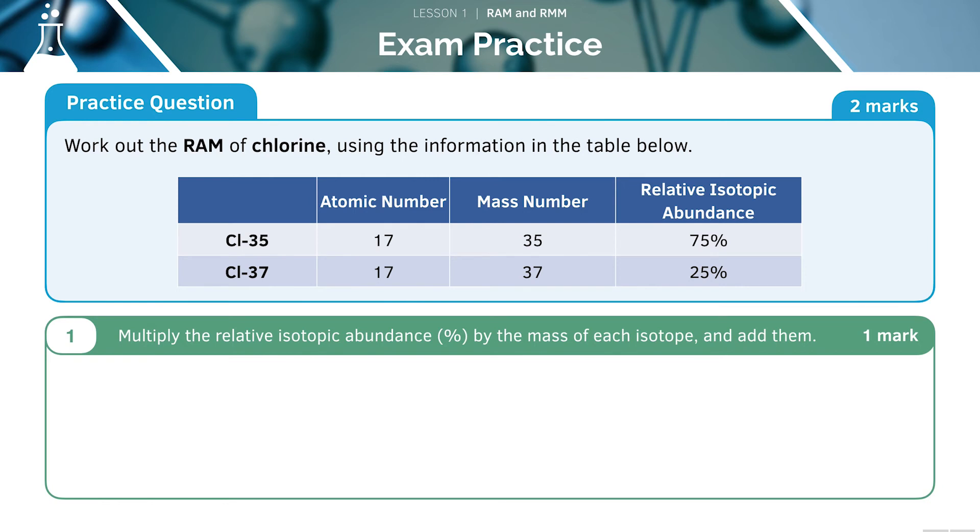Let's go through it step by step. Our first step is to multiply the relative isotopic abundance by the mass of each isotope and add them together. So here we'll be writing in 35 times 75 and we'll be adding this to 37 times 25. This should give us a value of 3550.